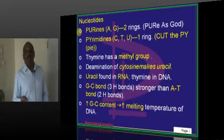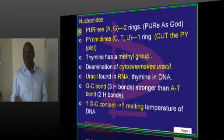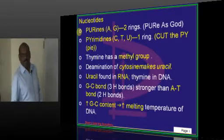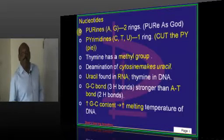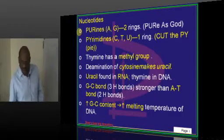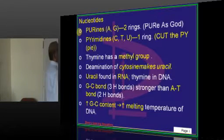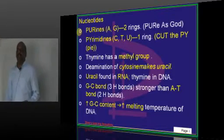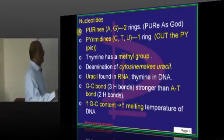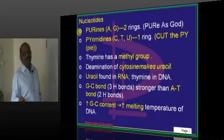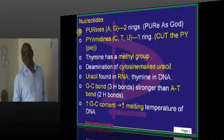Pyramidins are cytosine, thymine, uracil. Thymine is not thiamine. Thiamine is vitamin. Thymine. Cut the pie. Cut is cytosine, uracil, and thymine.